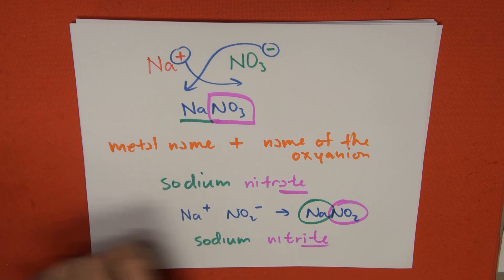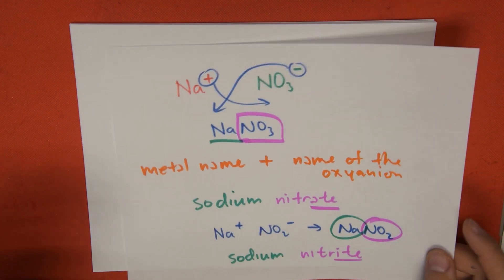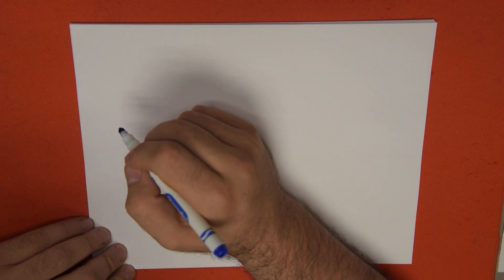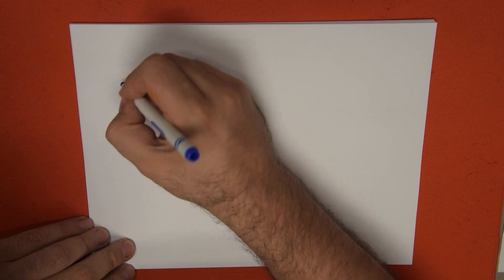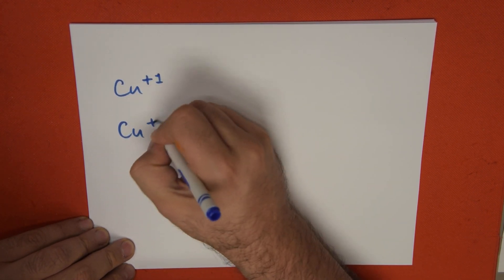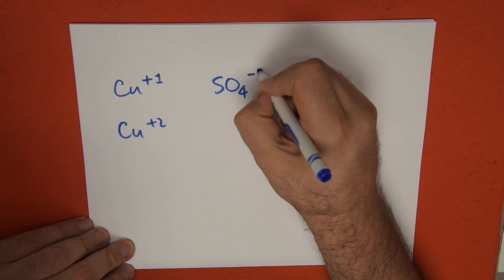Let's do another example because, if we have metals with more than one valence, that's going to change with the classic and the stock system names. We're going to do an example of copper. Copper plus 1, copper plus 2, mixed with sulfate, which is SO4 minus 2.